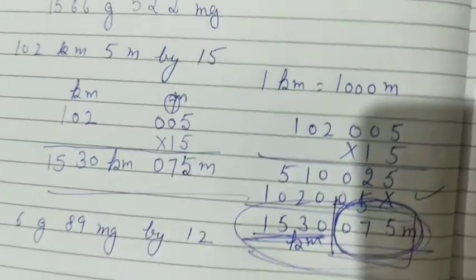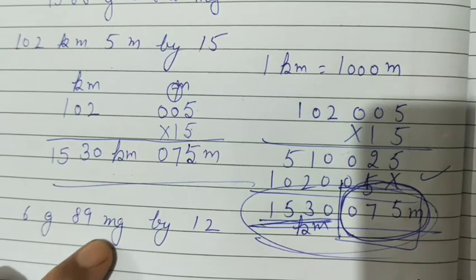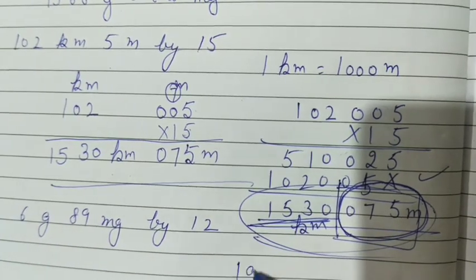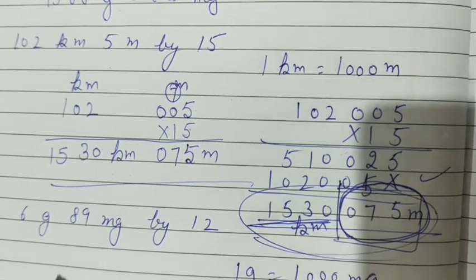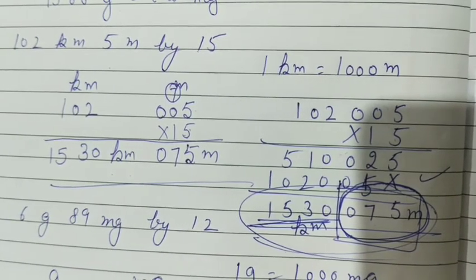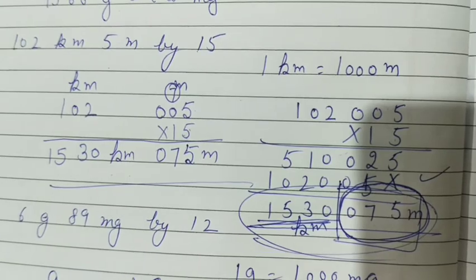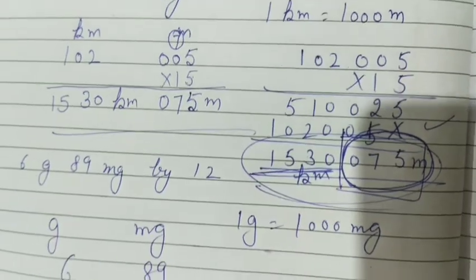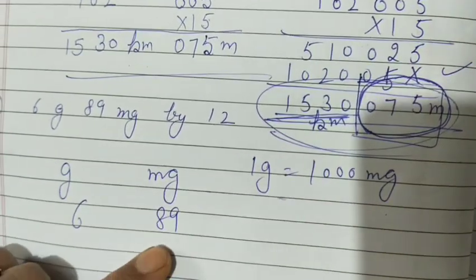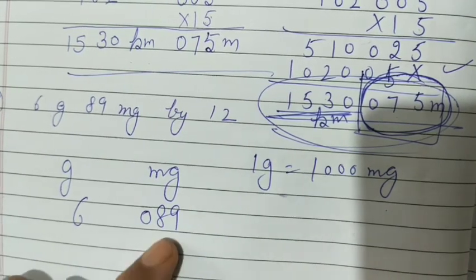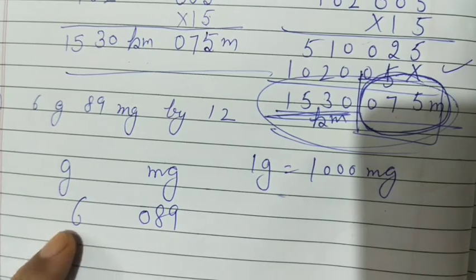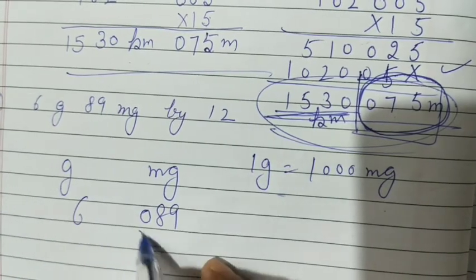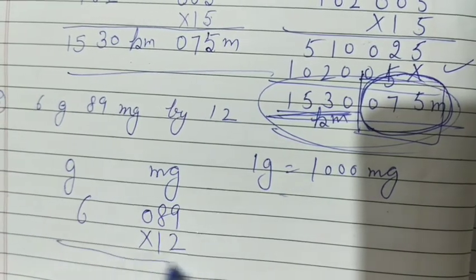Now question 5. Gram, milligram. In 1 gram, how many milligrams? In 1 gram there are 1000 milligrams. It means 3 digits should be there. Gram, milligram 6, 89. So here 3 digits should be there. How will 3 digits be made? Here are 0, 8, 9. Yes. 89, 890. It is 89. So 6 gram 89 milligram. Now multiply by 12.